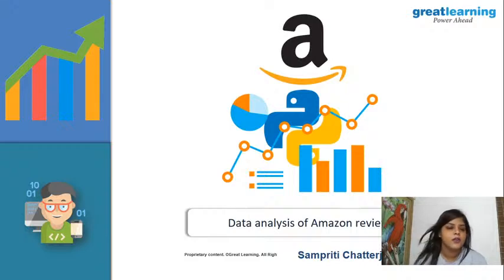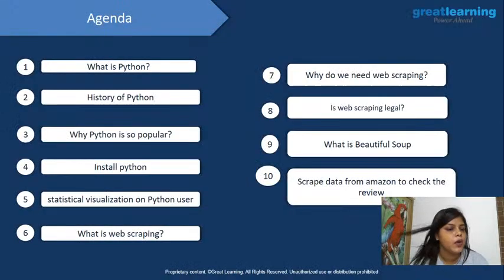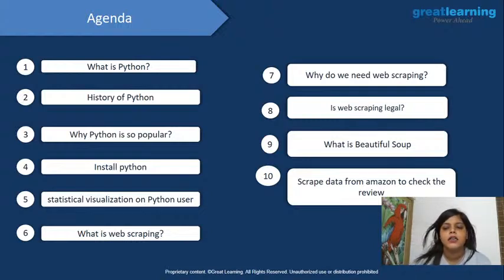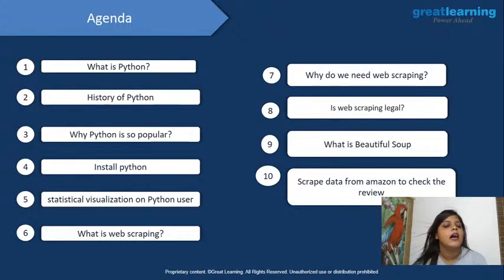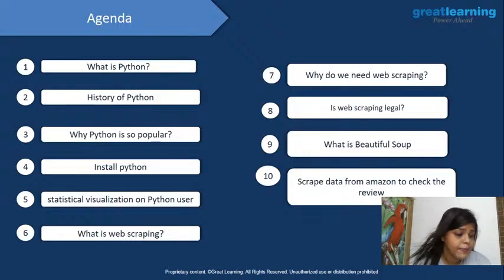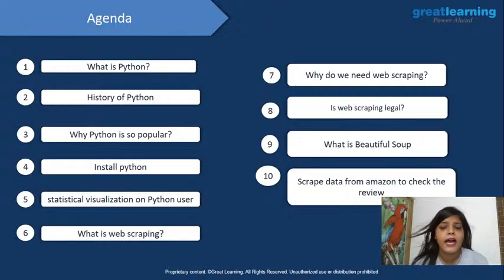Let's go over the agenda. We will do a brief intro on Python — what it is and its history — then we will do data scraping. We will talk about scraping legality, then about the Beautiful Soup library, then we will scrape data from Amazon, and finally we will do data analysis using that data.